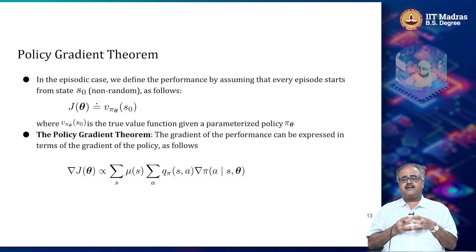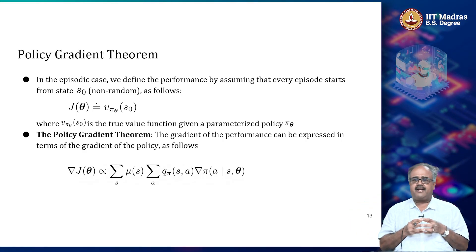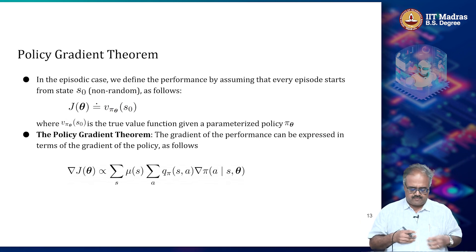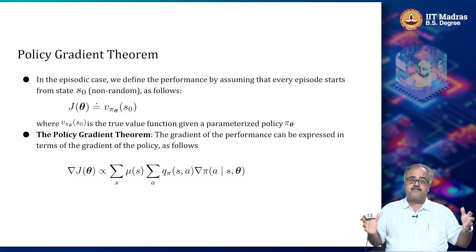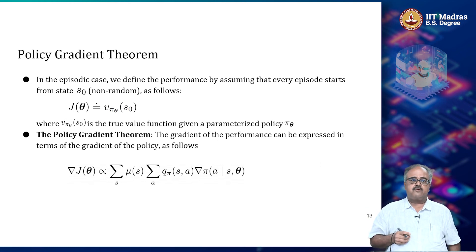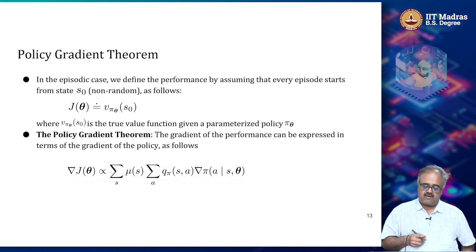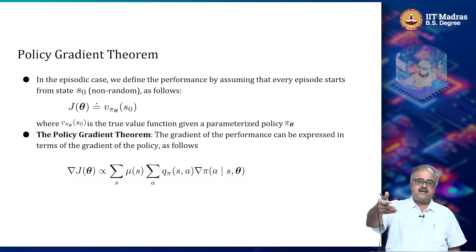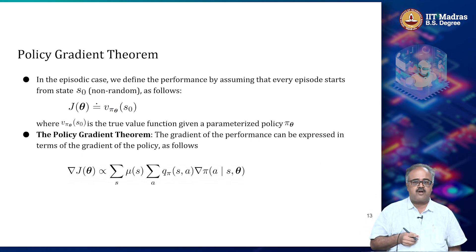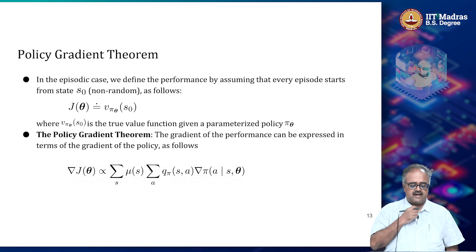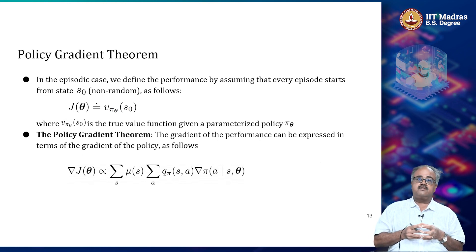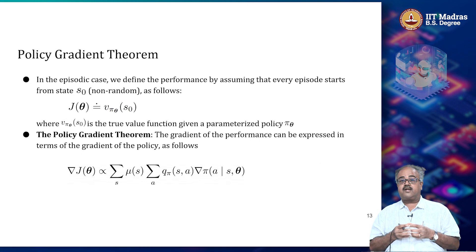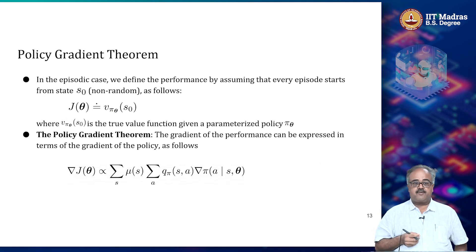So far, we have been looking at the immediate reward case, the bandit setting. That made life a little easy for us. And now we want to look at the full RL problem — the full reinforcement learning problem — where we will assume to begin with that we have an episodic case, where the episode runs for some non-deterministic number of time steps. What we are going to do is come up with a version of the policy gradient approach that works for this full reinforcement learning problem.